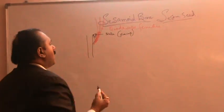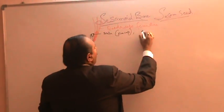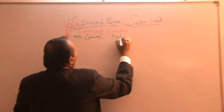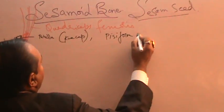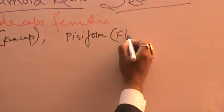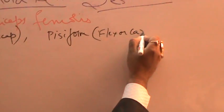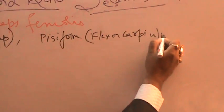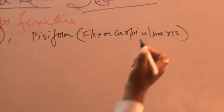You also have other sesamoid bones, like the pisiform bone, which develops in the tendon of flexor carpi ulnaris.